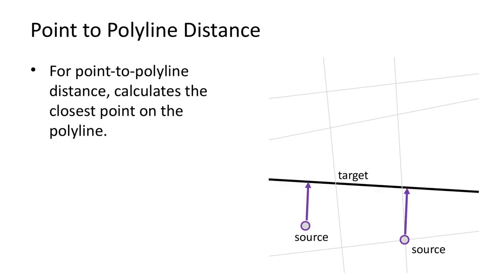For point-to-polyline distances, the closest point on the polyline is calculated. This closest point is not necessarily a vertex. It is calculated by projecting the source point onto the polyline. The distance between the source and the closest point is then calculated.